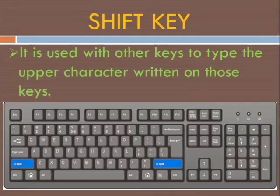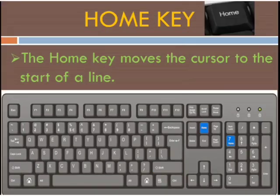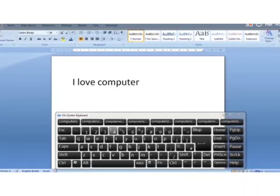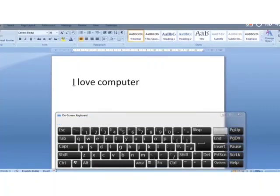The home key moves the cursor to the start of a line. The end key moves the cursor to the end of a line. You can see — our cursor is at the end of the line. Now I press the home key and our cursor moves to the start of the line. Now pressing the end key moves our cursor back to the end of the line.